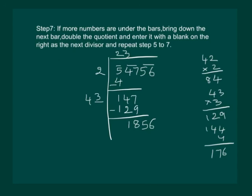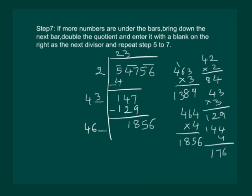And now we have to double the quotient. It becomes 46 with the blank on the right. Now we have to repeat step 5. So let us try and guess a number. If we try it with 3, we are getting 1389. And on trying with 4, we get the same number.